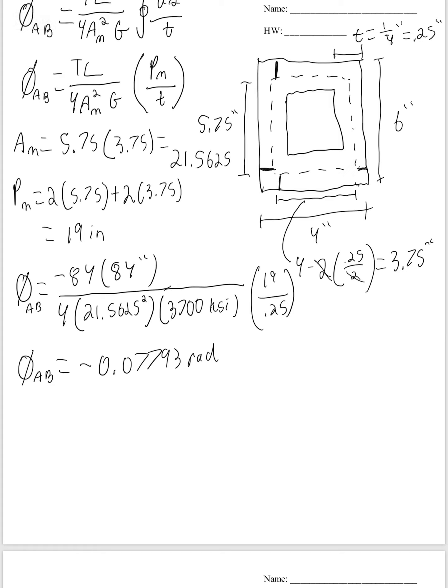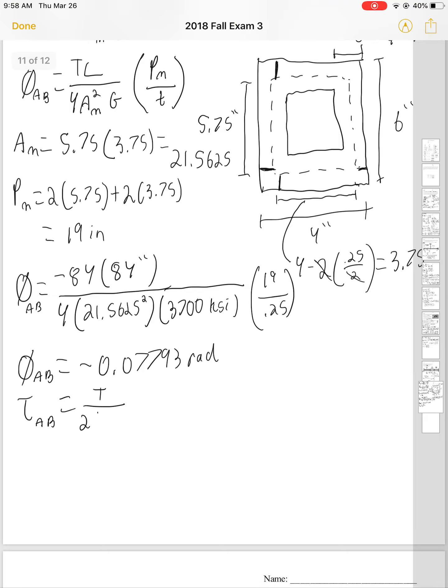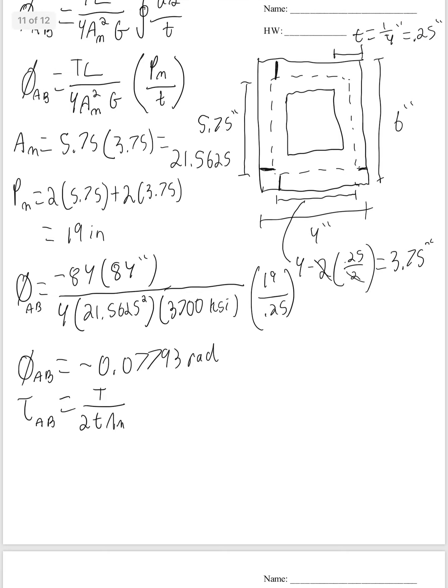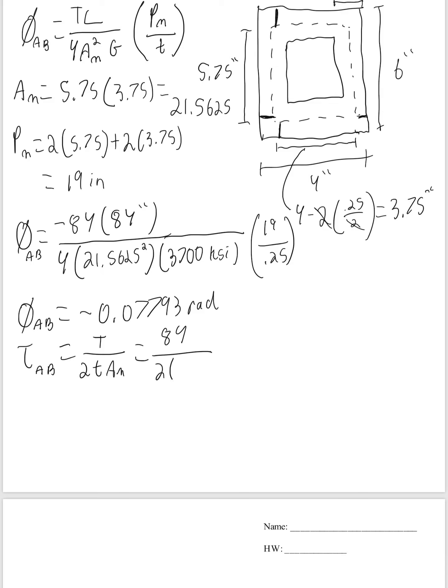We'll go ahead and find the max shear stress. The shear stress of AB, or any thin wall cross-section, is going to be the torsion, torque, divided by 2 times the thickness, times the area mean. Our torque equals 84. And here, the negative doesn't really matter. It's not like you could have a negative shear stress here. Unless you're just trying to denote direction. By 2 times the thickness of 0.25. We said the area mean is 21.5625. So we get a shear stress of 7.79 KSI.